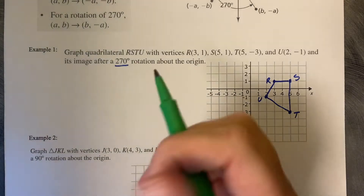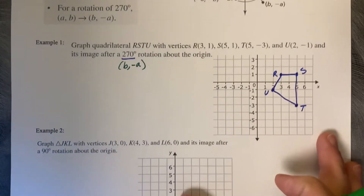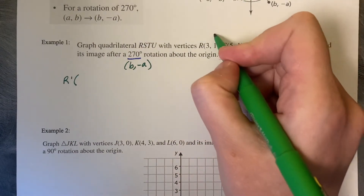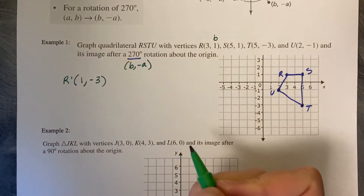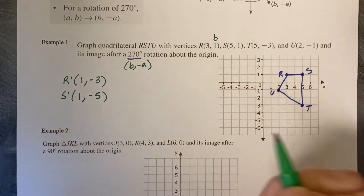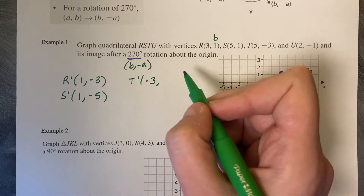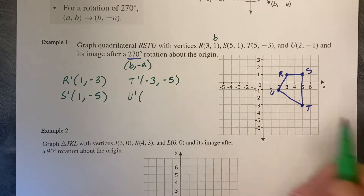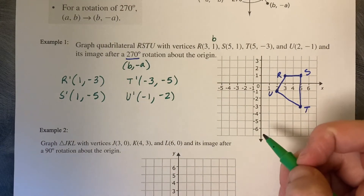The best way to do it is to use the rule. The rule for a 270 degree rotation is (B, -A). So we find R, S, T, and U prime. R prime: B is 1, so (1, -3). S prime: B is 1, negative A is -5, so (1, -5). T prime: B is -3, negative A is -5, so (-3, -5). U prime: B is -1, negative A is -2, so (-1, -2). Now we just plot those coordinate points.